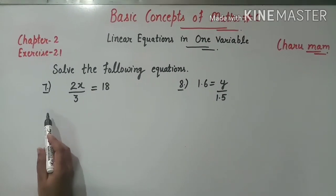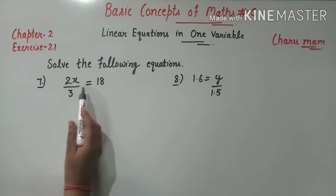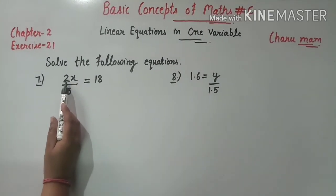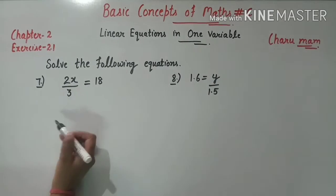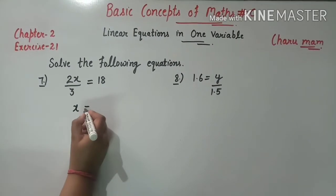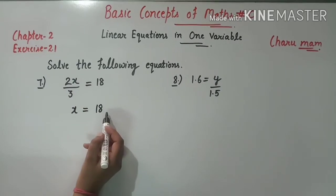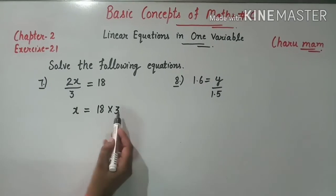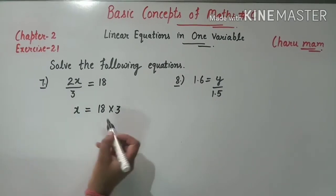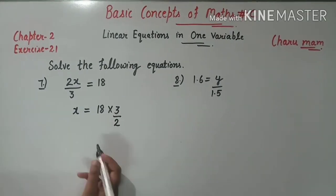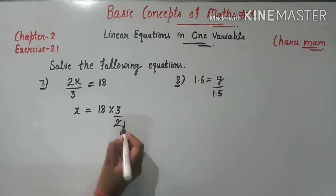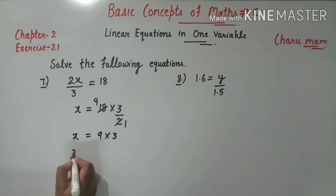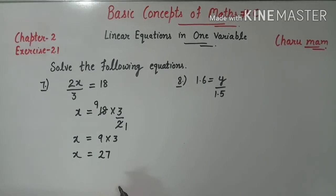Question 7: 2x upon 3 equals 18. 2 multiply में है और 3 divide में, तो x के लिए: 3 multiply में जाएगा और 2 divide में. Simplify: 2÷2=1, 18÷2=9; x = 9 × 3 = 27. So x की value है 27.